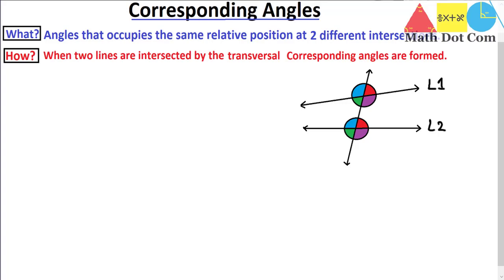When two lines are drawn like this, a transversal is drawn that cuts these two lines at two positions. This line is called the transversal — a line that cuts two lines at two different intersections. When this happens, you will come across angles. Here we have drawn the different angles with different colors so you can have a clear concept. When two lines are intersected by a transversal line, corresponding angles are formed.